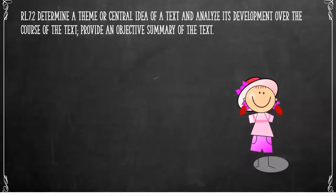Today we're going to delve into RL 7.2, which is to determine the theme or central idea of a text and analyze its development over the course of the text, and also to provide an objective summary of the text.